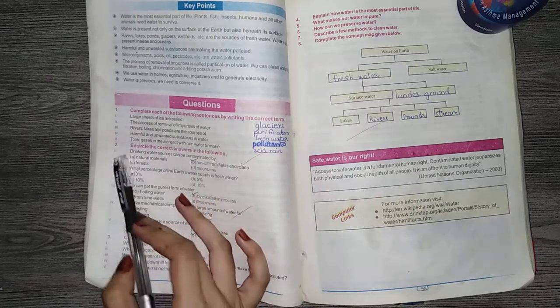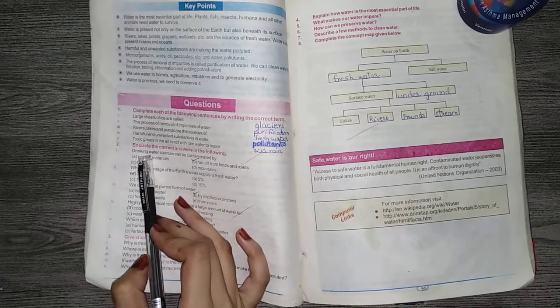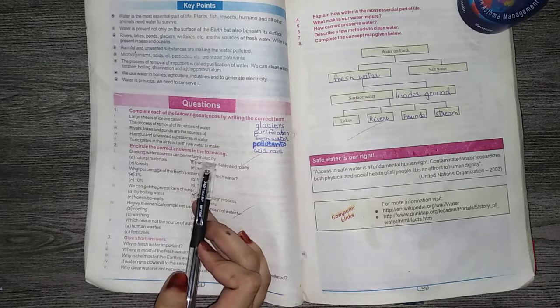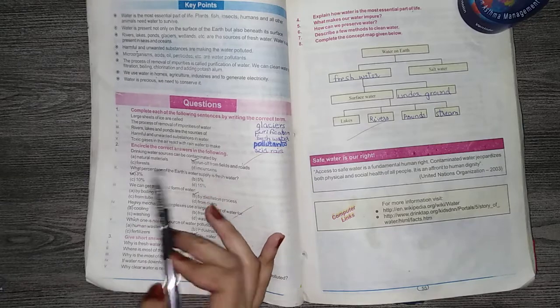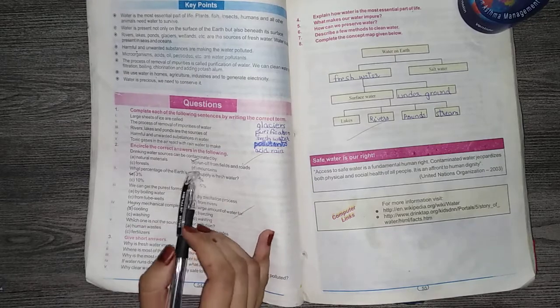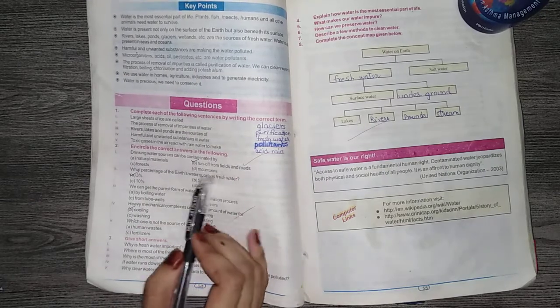Now let's look at MCQs. Question number 1, drinking water sources can be contaminated by: A, natural materials, B, pollutants from plants, C, forests, D, all of these. So this answer is B, the pollutants from fields and roads.